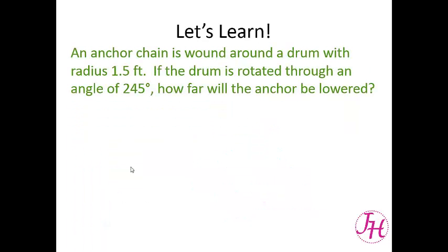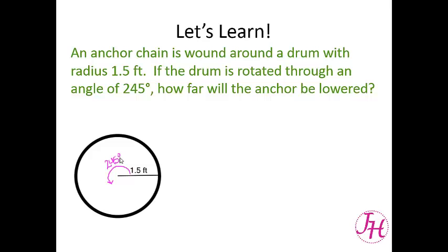An anchor chain is wound around a drum with radius one and a half feet. If the drum is rotated through an angle of 245 degrees, how far will the anchor be lowered? Here is our drum — this circle is our drum. Our radius is one and a half feet, and we are going to turn this drum 245 degrees. We want to know how far the anchor is going to be lowered.